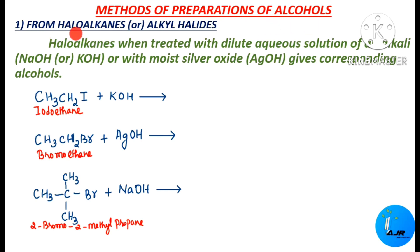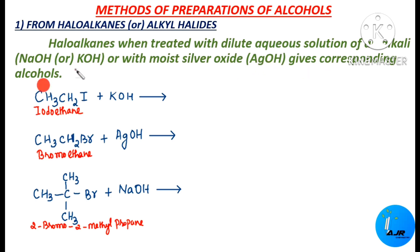The first method is from haloalkanes or alkyl halides. How to prepare alcohols from haloalkanes or alkyl halides? Haloalkanes, when treated with a dilute aqueous solution of an alkali — that is sodium hydroxide or potassium hydroxide — or with moist silver oxide (Ag2O), gives corresponding alcohols.